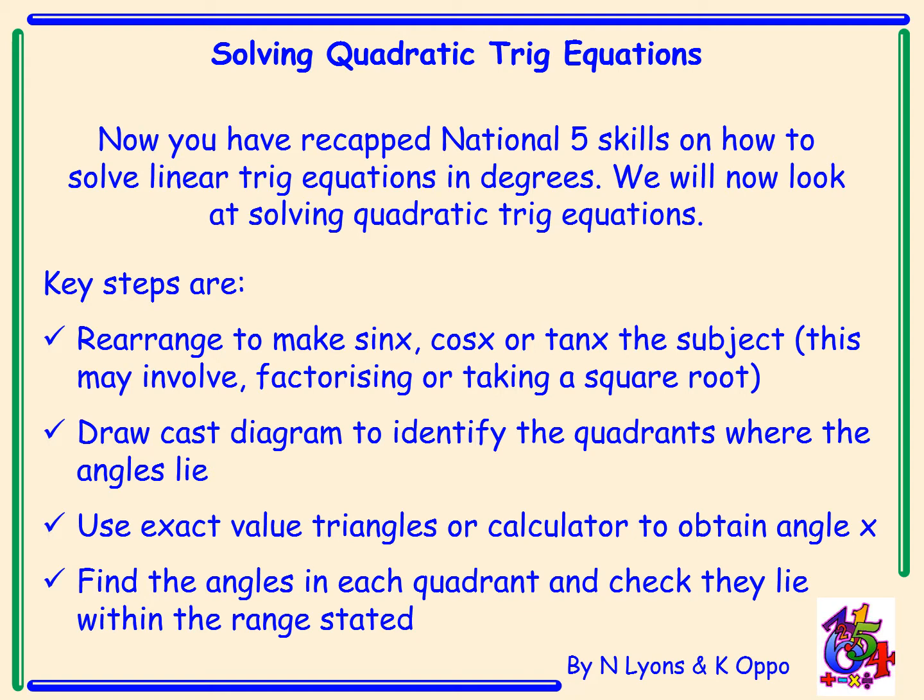We still need to draw a CAST diagram to identify the quadrants where the angles lie. We still have to use exact value triangles or a calculator to obtain our angle x, and the final step is also the same in that we need to find the angles in each quadrant and ensure they lie within the range that is stated.